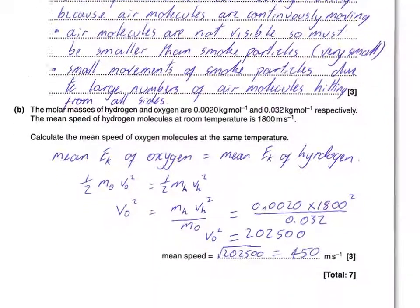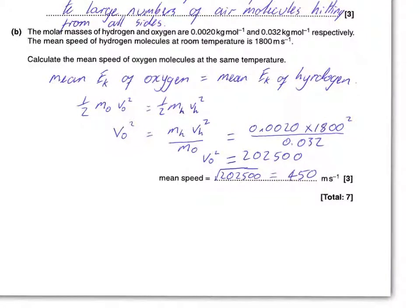Moving on, we now have a numerical part to the question. We are provided with molar masses for both hydrogen and oxygen. We are also told the mean speed of hydrogen molecules and that the temperature is constant.